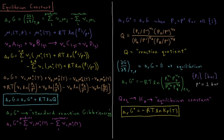The standard reaction Gibbs energy, ΔrG°, is the sum over the products of their stoichiometric coefficient times their standard chemical potential — the chemical potential at that temperature when the pressure is 1 bar — minus the sum over all reactants of their coefficients times their chemical potential at that temperature when they are also at 1 bar. So whenever each species in the reaction is in its standard state, which for an ideal gas is 1 bar of pressure, that's when we have the standard Gibbs energy of reaction.